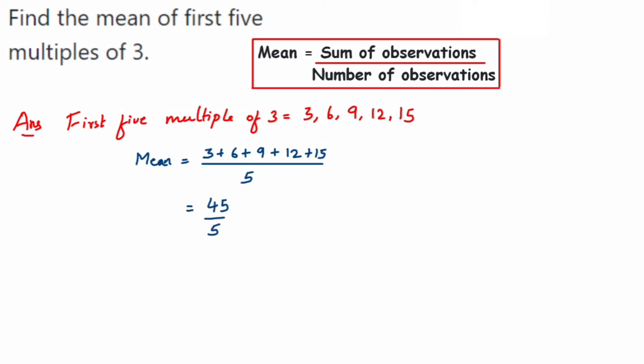We can cancel 5 and 45 in the multiplication table: 5 ones are 5 and 5 nines are 45. From here we get mean is equal to 9.